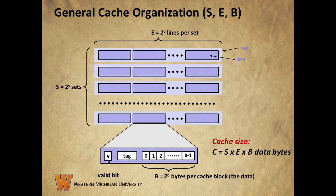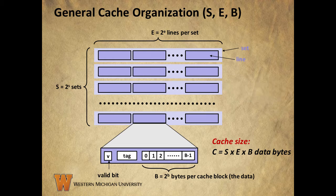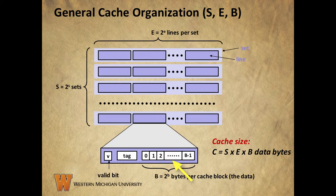So let's talk about the general organization of a cache. This illustration represents the cache of a system where a memory address has lowercase m bits, meaning there are a total of uppercase M equals 2 to the m unique addresses. We have the cache organized into capital S sets, each of which contains capital E lines. Each line contains a valid bit which indicates whether the line contains meaningful information, the tag field which uniquely identifies the block stored in the line, and the bytes actually in the block of data.